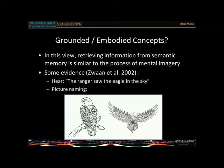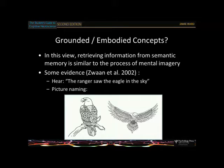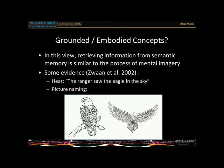An experiment illustrating this: participants name pictures (e.g., say 'eagle') after hearing a sentence like 'the ranger saw the eagle in the sky.' They are faster to name the eagle shown with wings spread than one in a nest. The claim is that when you process that sentence you're not just doing abstract symbolic understanding — you're actually representing what an eagle in the sky probably looks like. The reverse condition — 'the poacher saw the eagle in its nest' — produces the opposite facilitation.